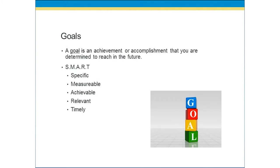Let's take a look at goals. A goal is an achievement or accomplishment that you are determined to reach in the future. Goals should be SMART — an acronym. Specific: your goals should be very specific. Measurable: you should be able to measure them and have indicators of progress along the way — you'll know when they are achieved. Achievable: a SMART goal is something you can achieve, not something you can't. Relevant: it should be relevant to what you're trying to accomplish. And finally, Timely or time-bound: it should have a deadline for when you want to accomplish it. So if goals are SMART — specific, measurable, achievable, relevant, and timely — it's an achievement you will most likely reach in the future.